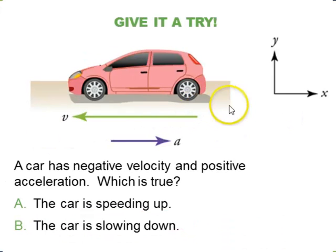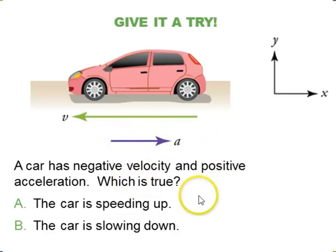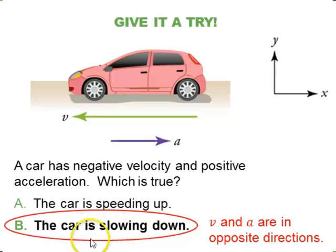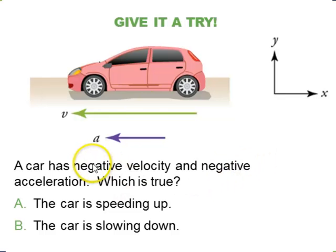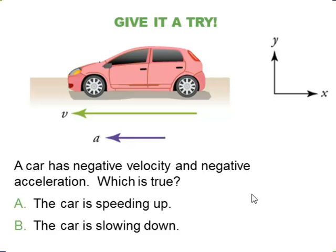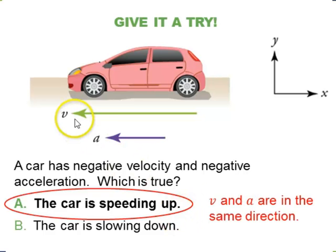Now turn the car around so it's driving towards the left — the velocity is now negative. If the acceleration is positive, the car is slowing down again, because velocity and acceleration are in opposite directions: accelerating right, moving left. Finally, if the car has negative velocity moving left and negative acceleration, both vectors point left — same direction — so the car is speeding up.